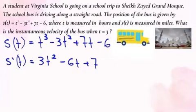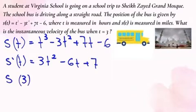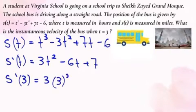To find the instantaneous velocity of the bus when t equals 3, we have to substitute t by 3. So s'(3) = 3(3²) - 6(3) + 7.